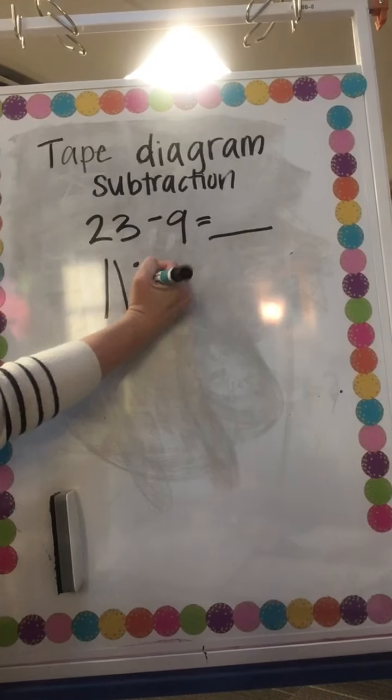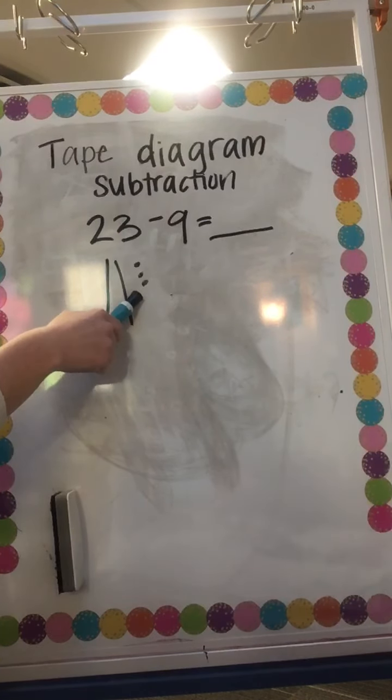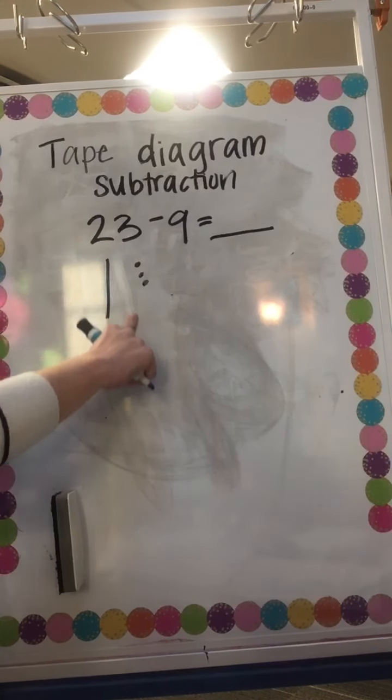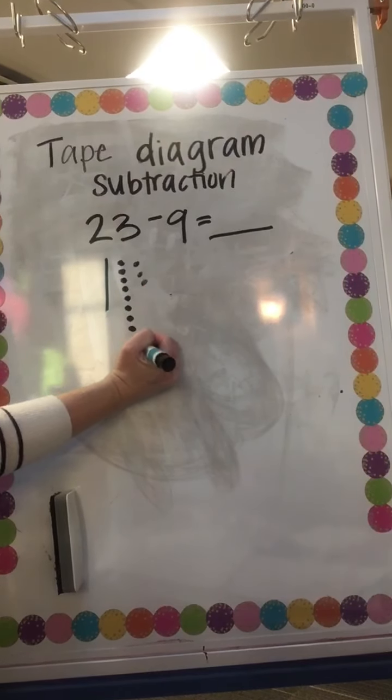What gets complicated about this is I don't have 9 ones to take away, so I have to borrow. 1, 2, 3, 4, 5, 6, 7, 8, 9, 10.